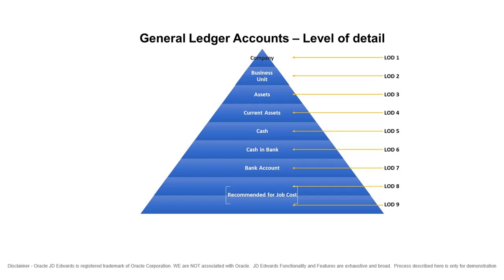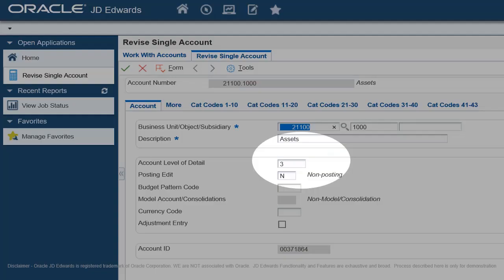Look at the chart to see how the Levels of Detail work. While assigning Level of Detail to an account, observe these guidelines: Do not skip any Levels of Detail. Non-sequential Level of Detail causes summarization errors in financial reports.